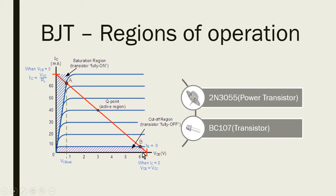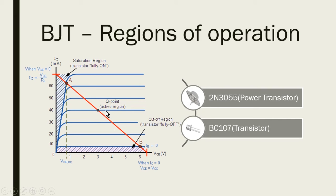The saturation region means the transistor is in the fully on condition. This shaded portion represents the saturation region, and this is your active region, where the transistor will be on during the full cycle.